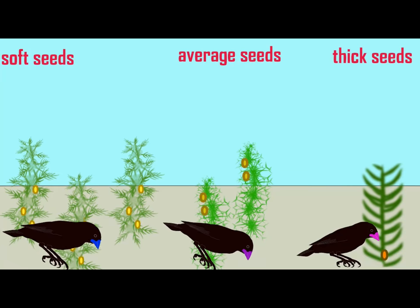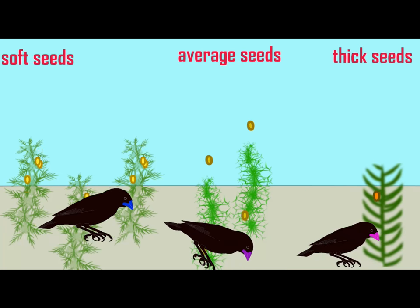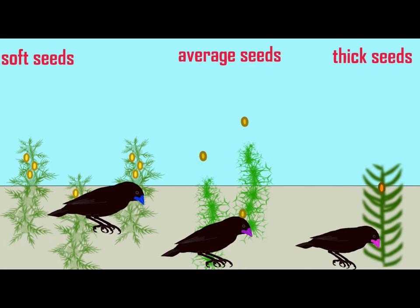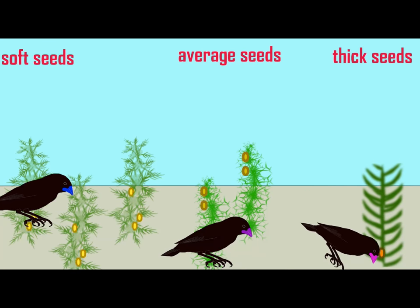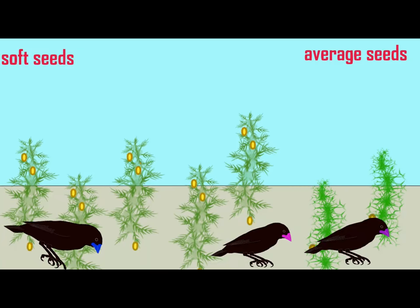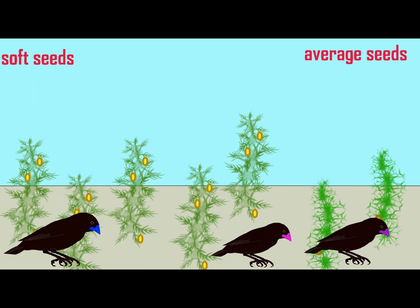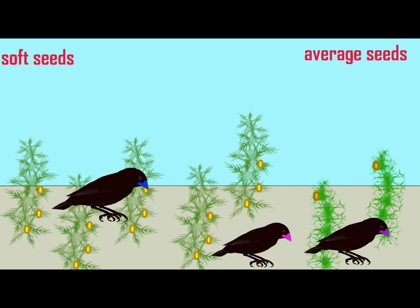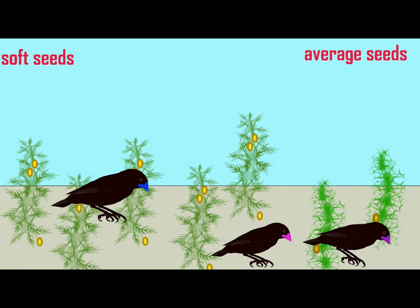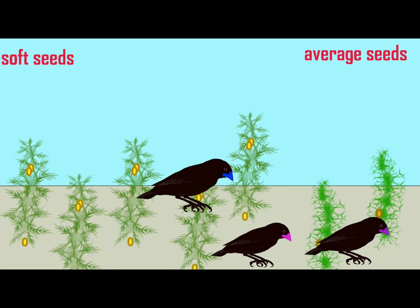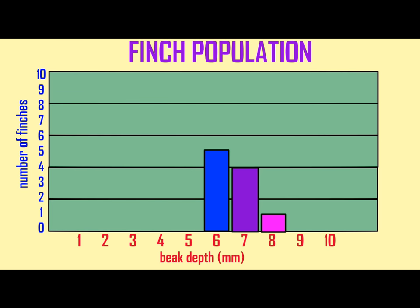while on the opposite side of the mountain range, wetter conditions could increase the frequency of softer seeds, which then favor thin-beaked finches.